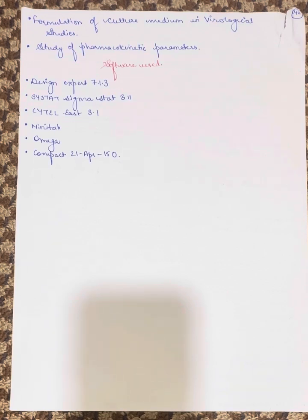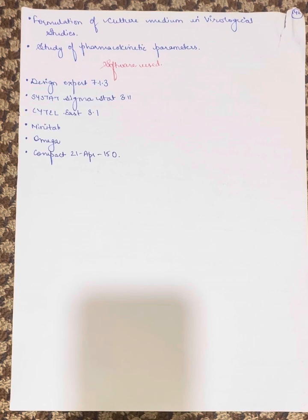Some software tools used for factorial design include Design Expert 7.1.3, SYSTAT SigmaStat 3.11, Cytel IS 3.1, Minitab, Omega, and Compact 21.